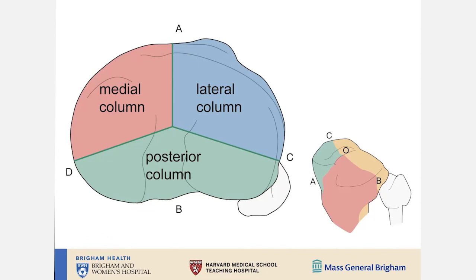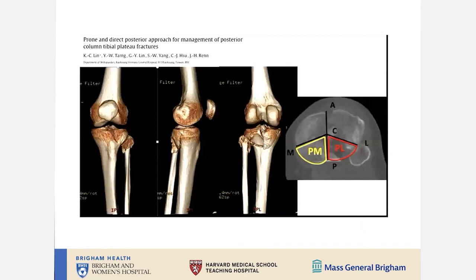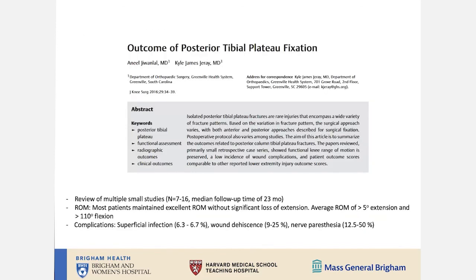The key decision point: go posterior for an isolated posterior column fracture — it makes it easier to just lay the patient prone. This is especially true when there is both posterior medial and posterior lateral involvement. In general, adequately fixed posterior tibial plateau fractures have a fairly good clinical outcome, though patients occasionally lack some extension due to scarring in the back of the knee. Be mindful of this and potentially keep the patient in extension for a period after surgery — it is usually easier to regain flexion than extension.